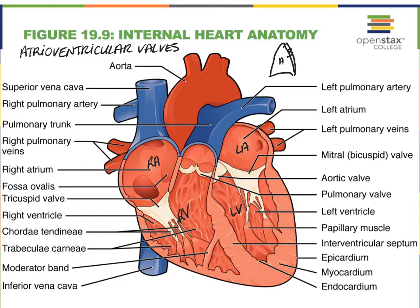These semilunar valves, as you can see, do not have any chordae tendineae attached to them. But I want to come back to these chordae tendineae that we do see attached to the atrioventricular valves, which are also attached to these nipple-like papillary muscles. The importance here is that these papillary muscles will contract first when the ventricles start to contract. Remember that the ventricles tend to start contracting from the apex area.